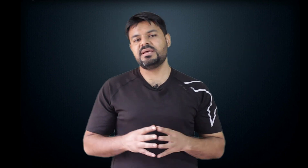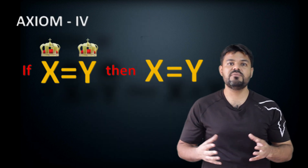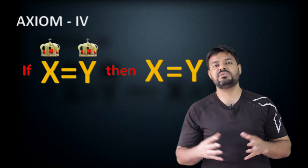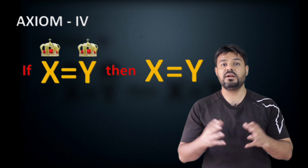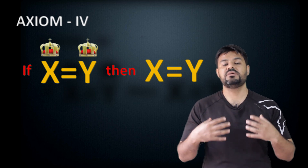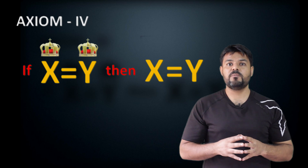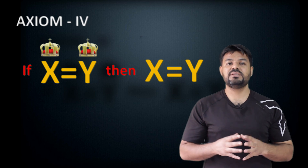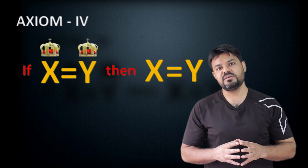Axiom 4 states the obvious: if the successor of a natural number x is equal to the successor of another natural number y — that is, if x prime is equal to y prime — then x is equal to y. This is fairly obvious.